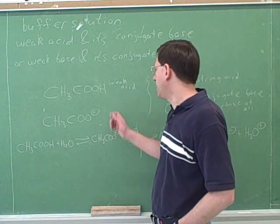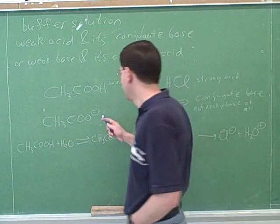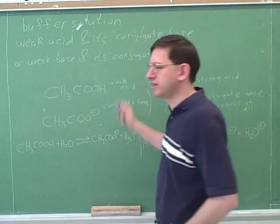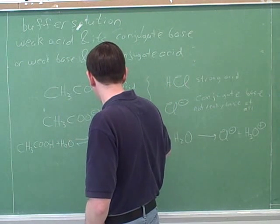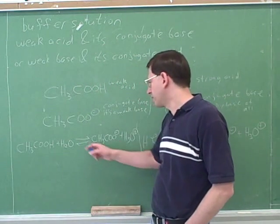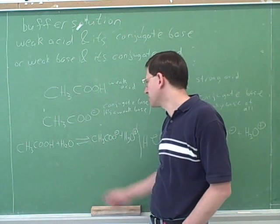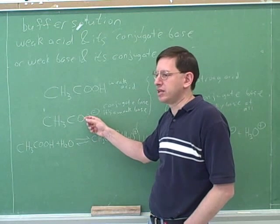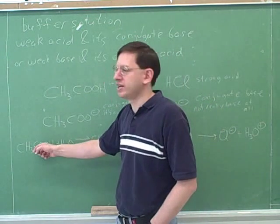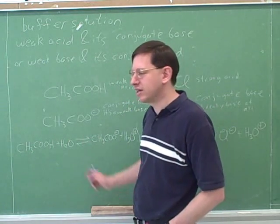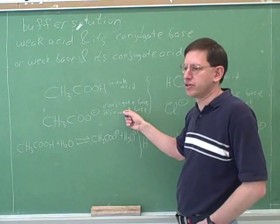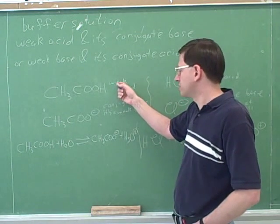This proves the point: the conjugate of a weak acid is a weak base. The acetate here is the conjugate base of acetic acid, and we can see it's a weak base — meaning its reaction with water goes to equilibrium, not to completion. Acetate likes to pick up protons, but not all acetates are going to do so. It's in equilibrium between the two sides. So anytime you have a weak acid, its conjugate base must also be weak, because a weak acid is one whose reaction with water goes to equilibrium.